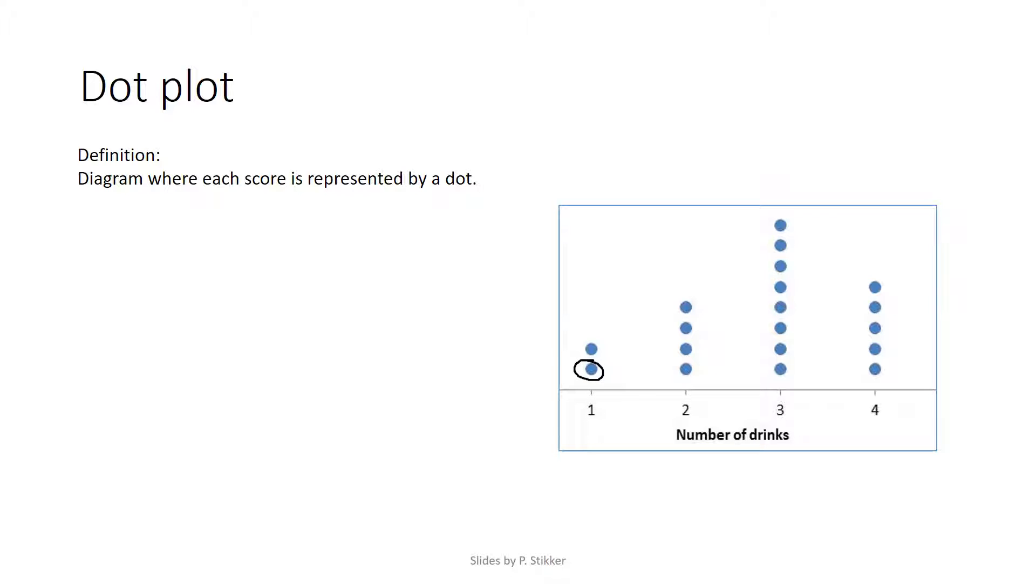So this dot represents a person that drank one drink. And as we can see, because there are two dots, there were two people who drank one drink. And if you count the dots here, that's four. So four people who drank two.